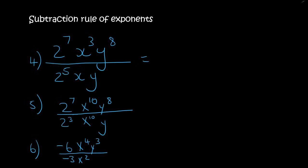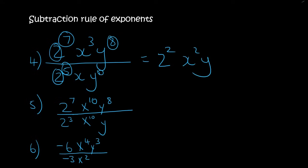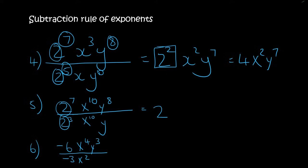Now if we look at number 4 — do the 2's have exponents? Yes they do, so you can't say 2 divided by 2. You leave it as a 2 and subtract the exponents, which gives 2². Then x³ divided by x gives x², and y⁸ divided by y¹ gives y⁷. You can then change 2² to 4 if you want. For the next one, the 2's again have exponents — so leave it as a 2 and say 7 minus 3 which is 4. The x's become x⁰, since 10 minus 10 is 0. Now x to the power of 0 is just 1, because anything to the power of 0 is 1, so it falls away and the answer is 2⁴y⁷, which equals 16y⁷.